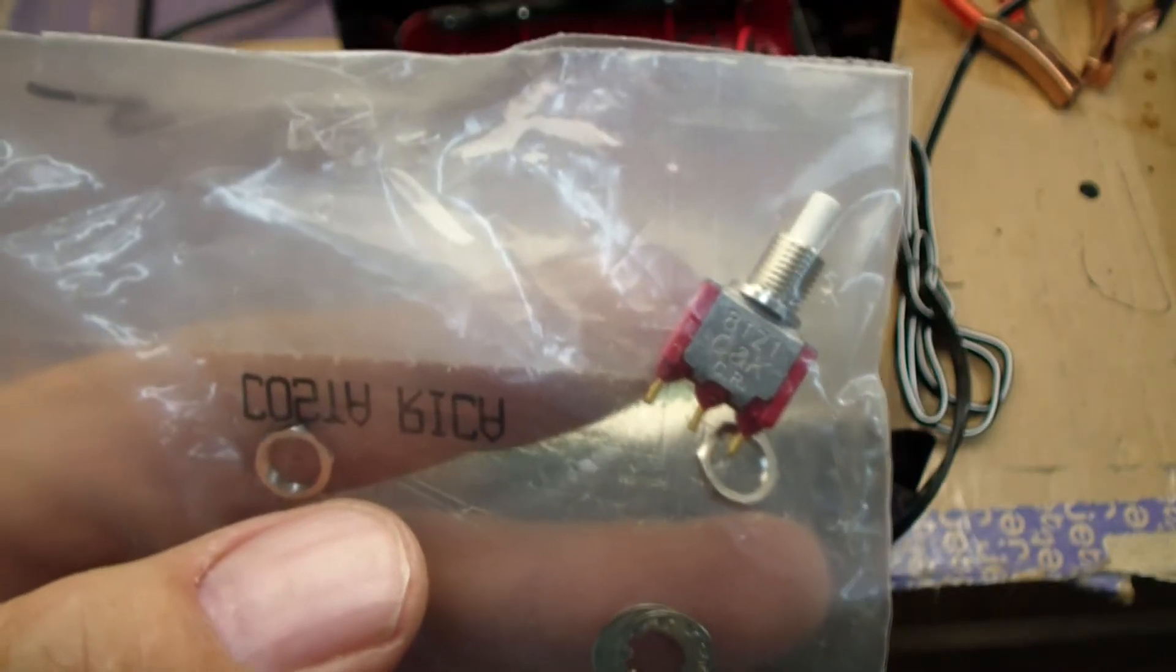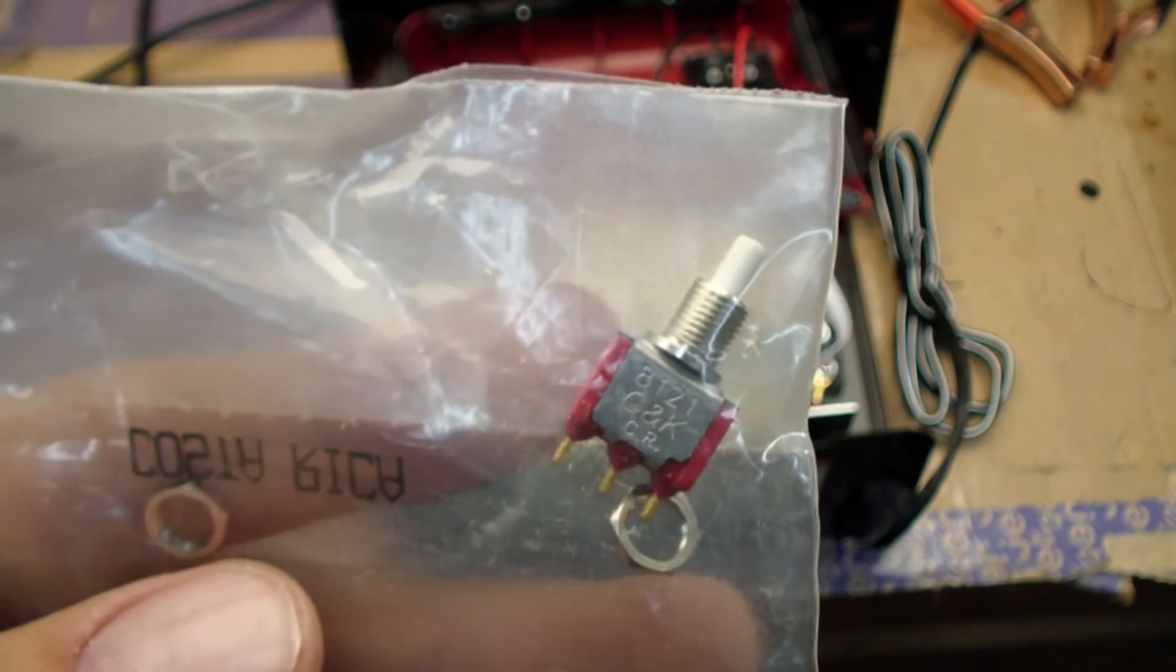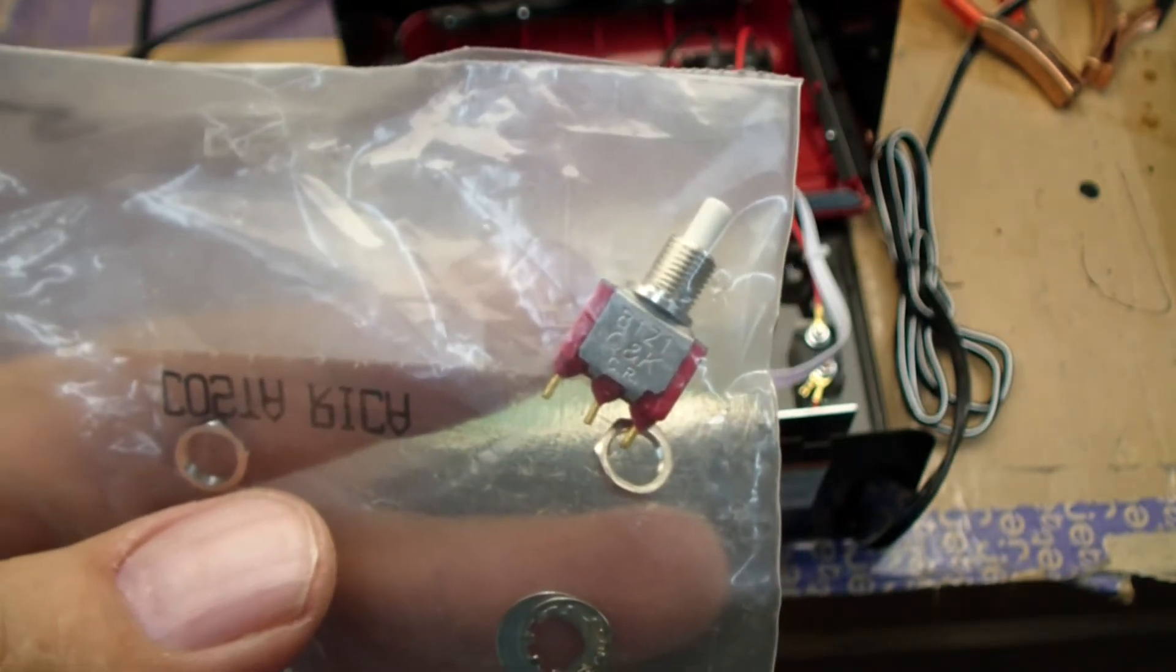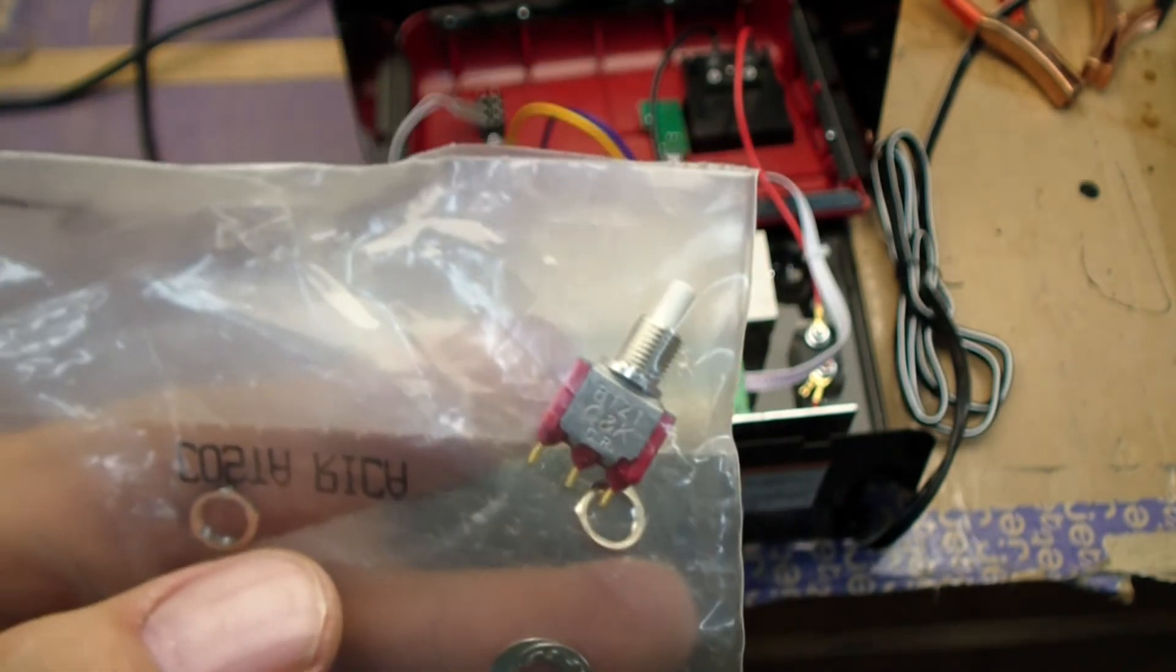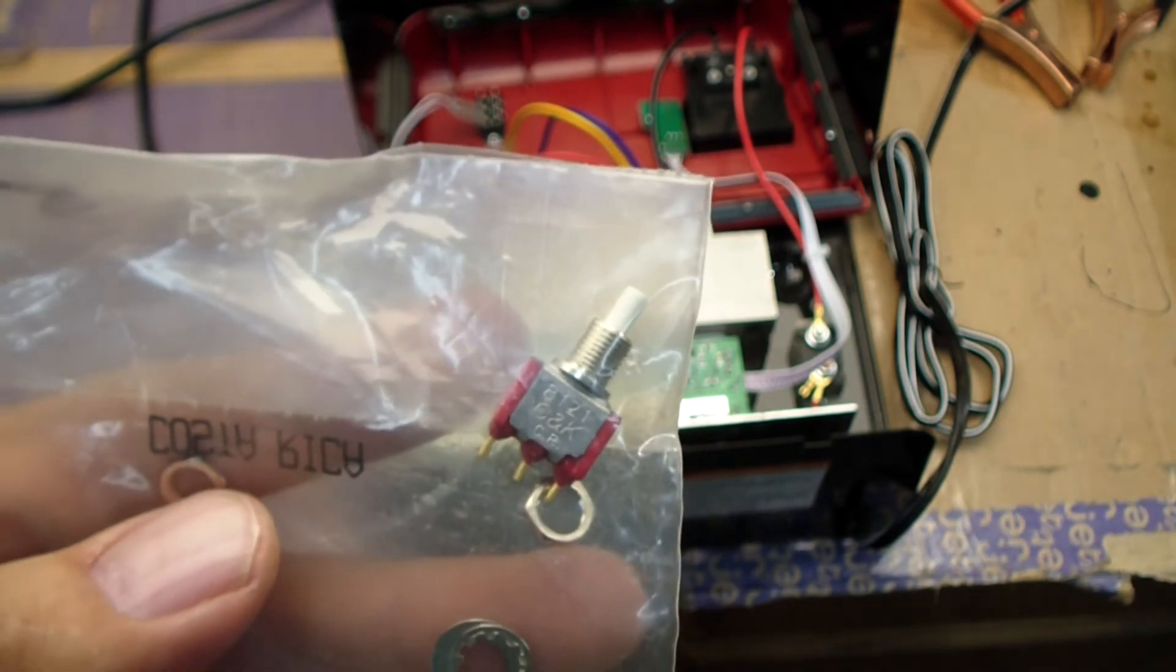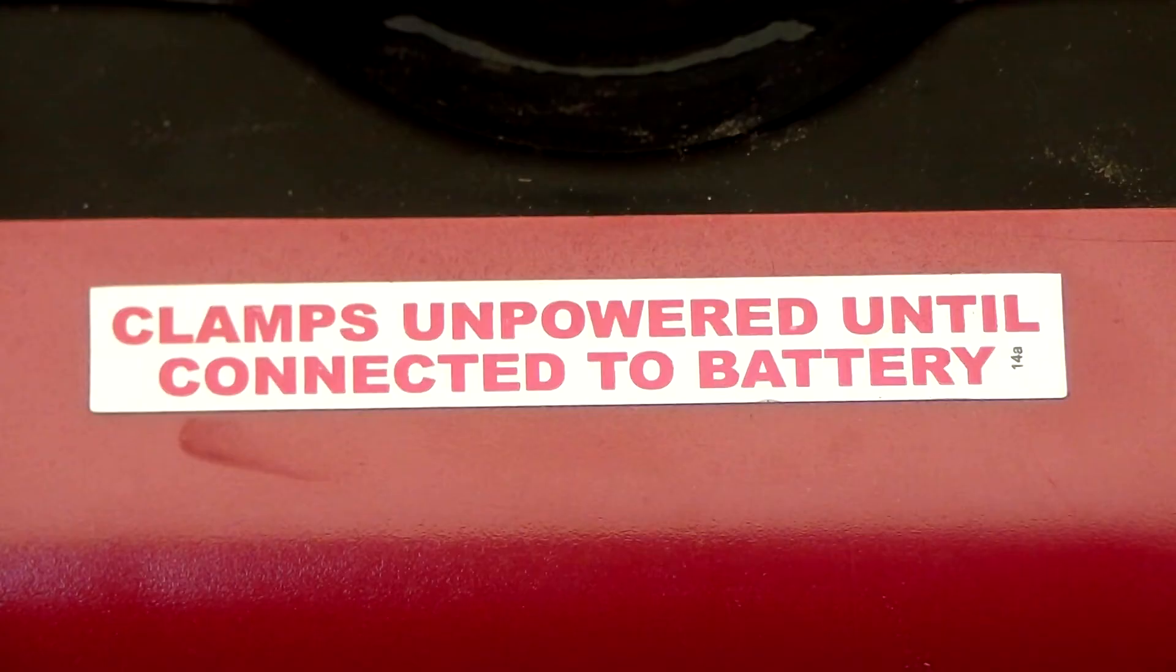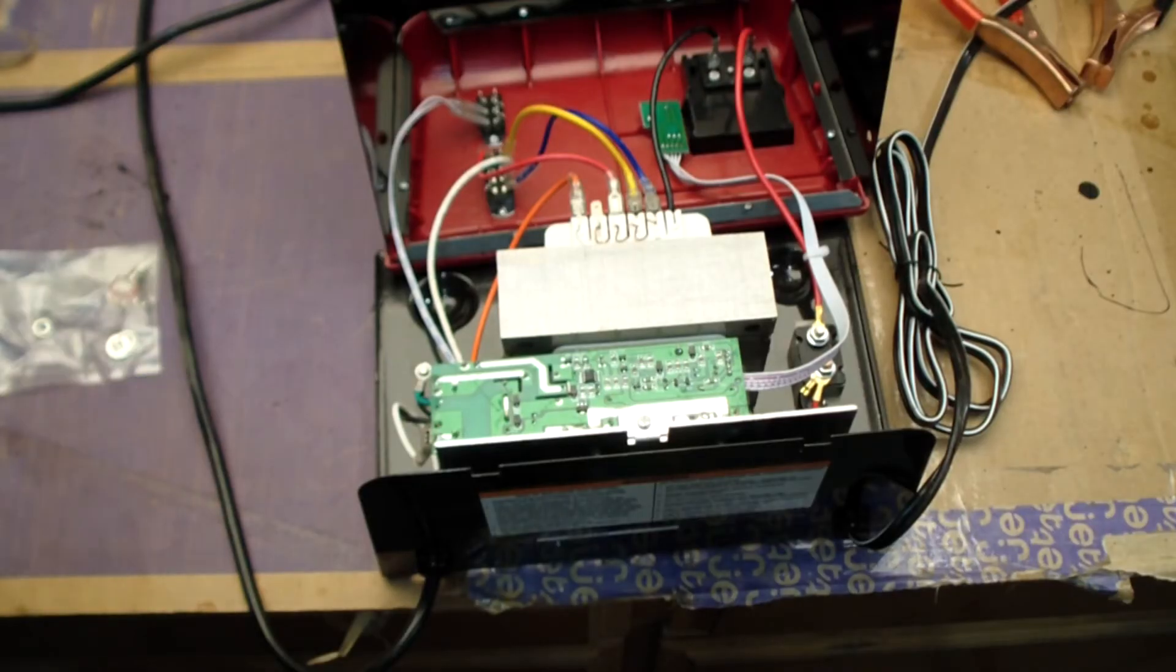I was reading a top rated review on the Harbor Freight website for one of the models of this power supply, and the guy said he hooked up a momentary actuating switch to enable the outputs when you have a battery with too low a DC voltage to power the unit. And I looked into putting it in here, and man, it didn't work out too well for me.